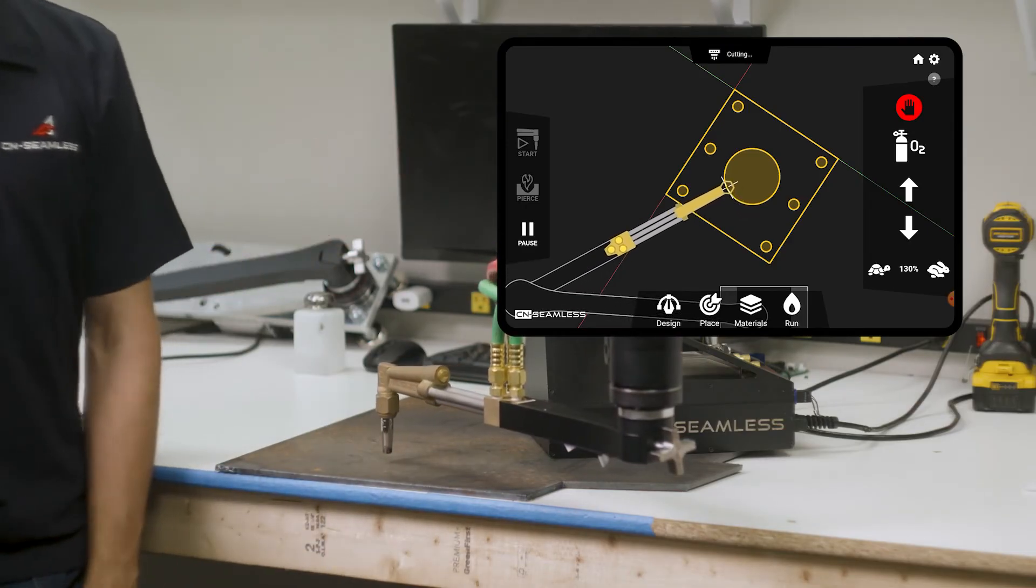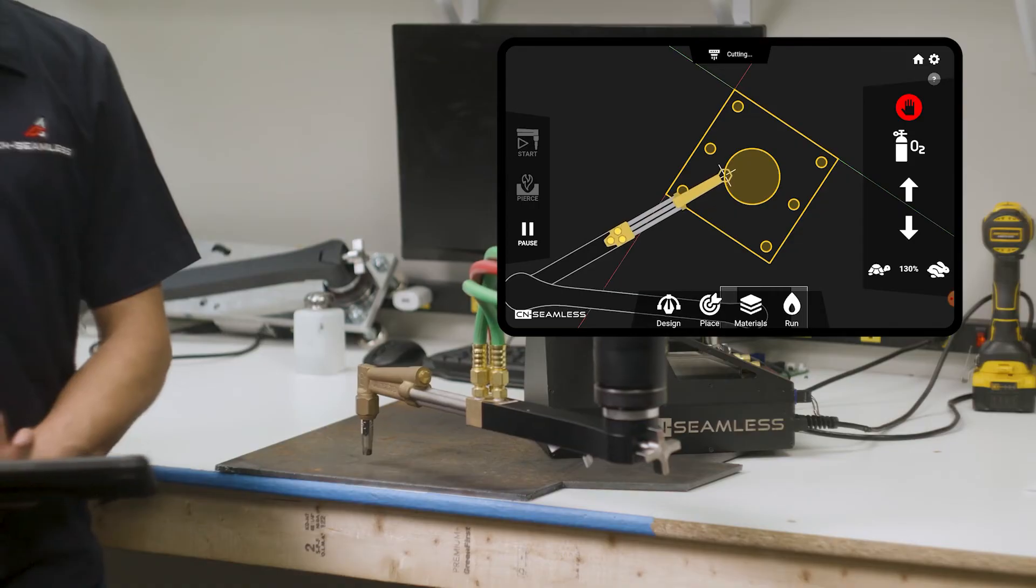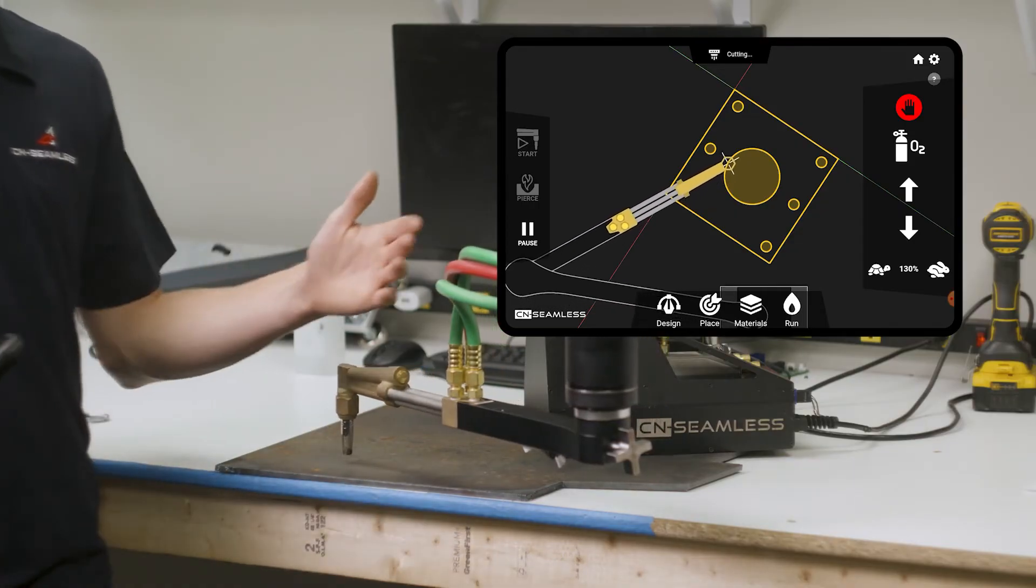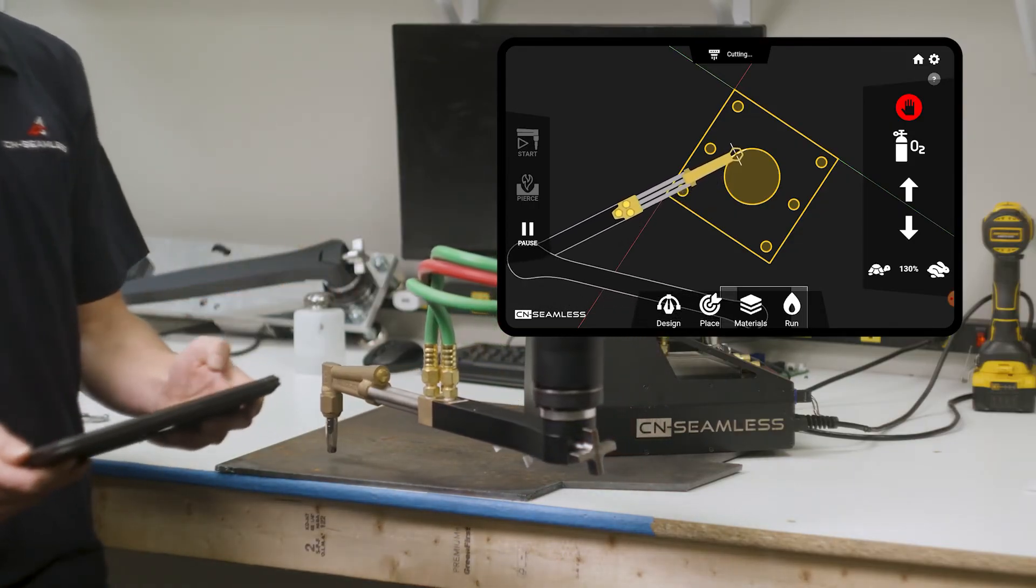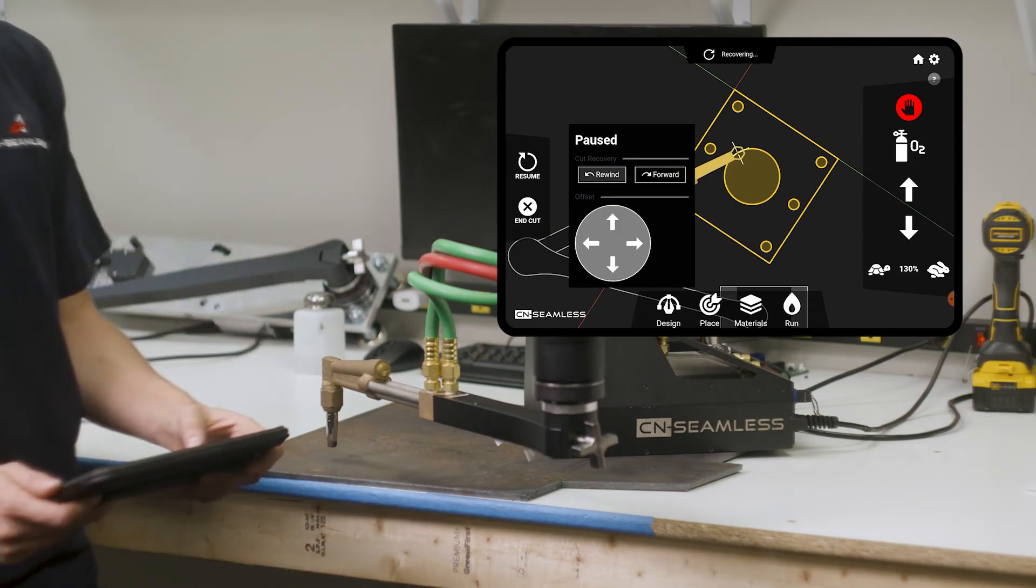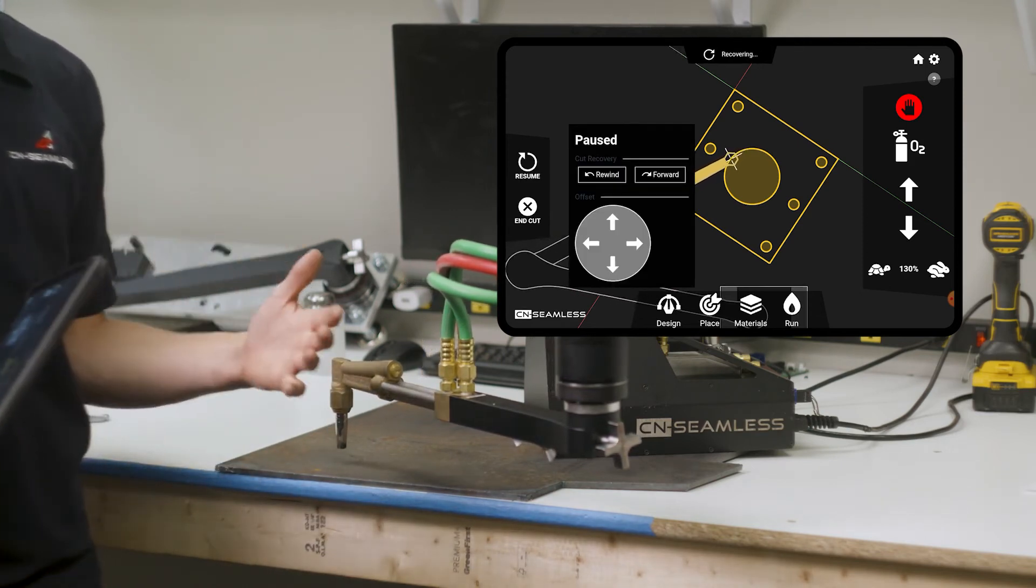Now let's say something happens during the cut. So you run out of oxygen, you get a little aggressive, moving too fast, and it outruns the cut. All you have to do is click pause. It's going to lift it up and you can hold this rewind button to go back to where it left off from.